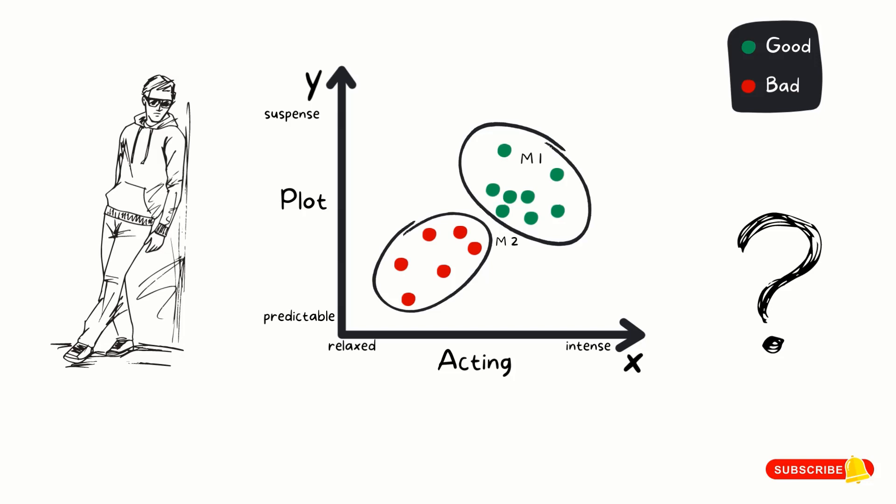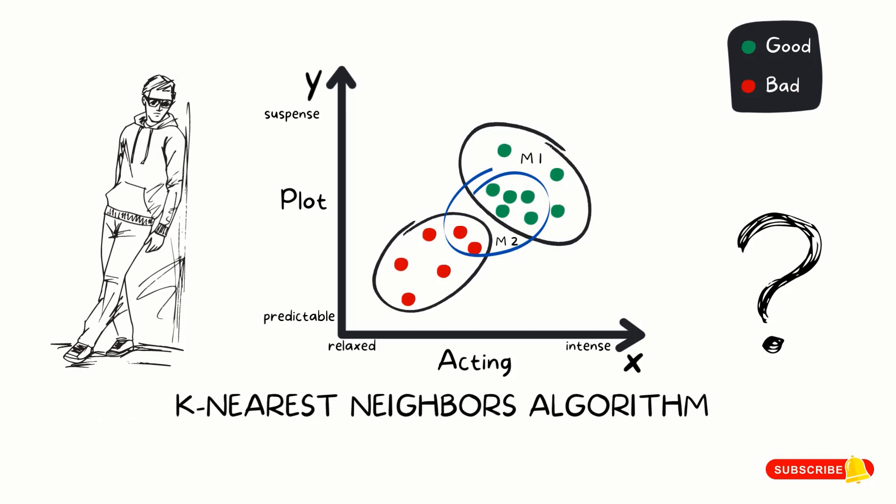This is where machine learning comes in. Using the same example, if we are to draw a circle around movie 2, there are 5 dots for good and 2 dots for bad. Going by the majority of dots closest to movie 2, we could say that Fred would rate the movie good. This is one of the basic machine learning algorithms, called the k-nearest neighbors algorithm. And there are many machine learning algorithms.